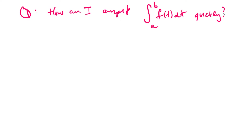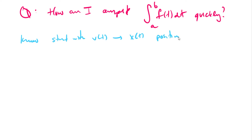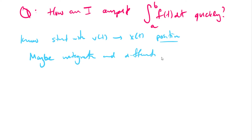The big question is: how can I compute the integral from a to b of f of t dt quickly? I don't want to use limits or the geometry of rectangles — I just want some formula. We know that integration works the opposite way differentiation does: if we start with velocity we end up with position, which is backwards from differentiation. So maybe integration and differentiation cancel each other out — and the answer is they are inverses.